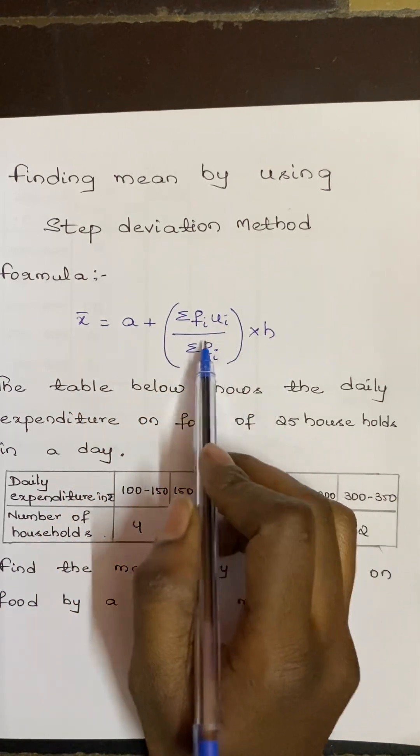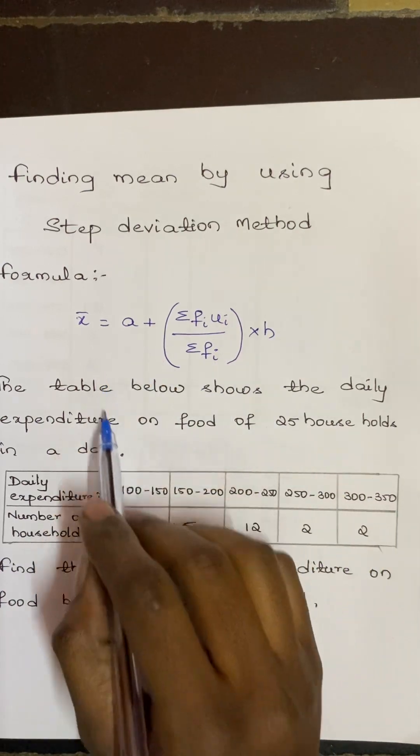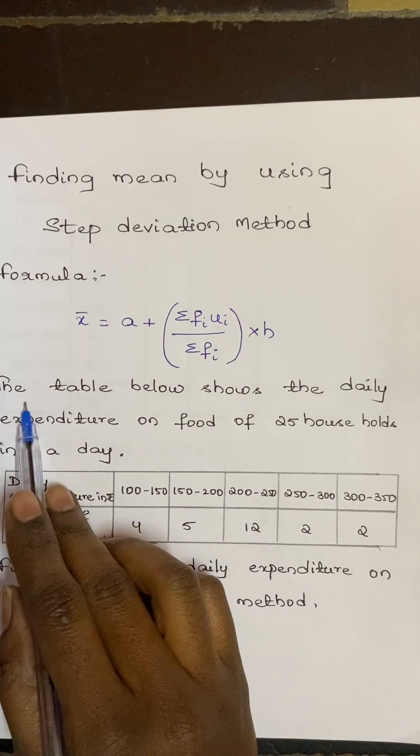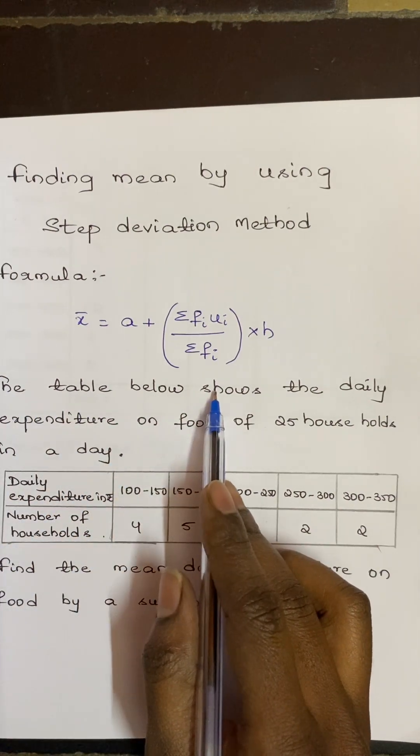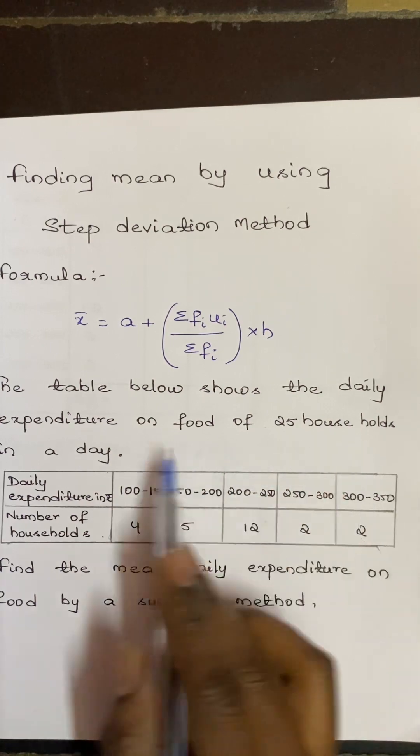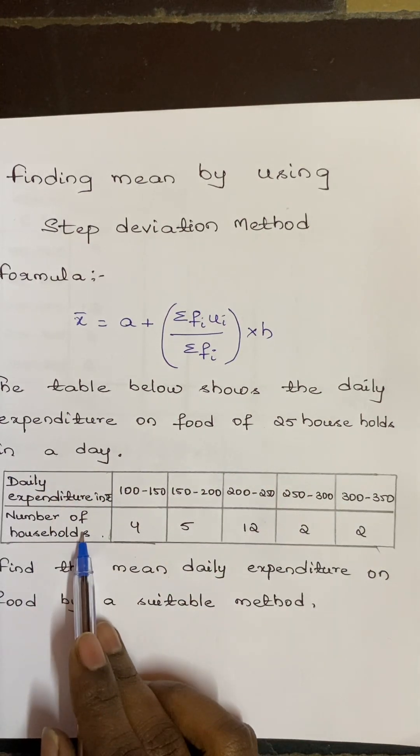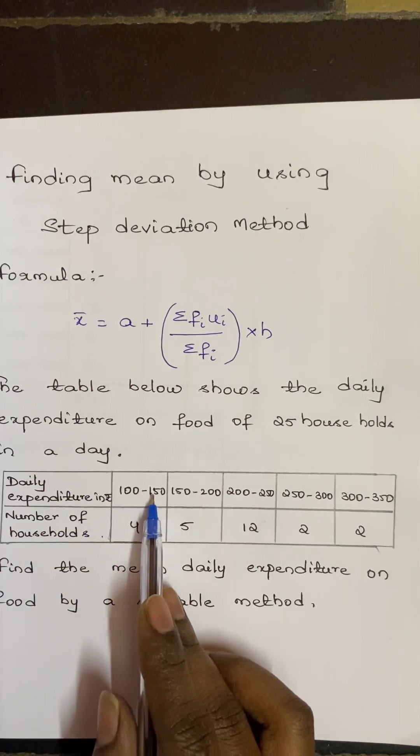So here I have taken an example sum from the 10th class textbook. The table below shows the daily expenditure on food of 25 households in a day. Daily expenditure and number of households: daily expenditure 100 to 150 has 4 households.